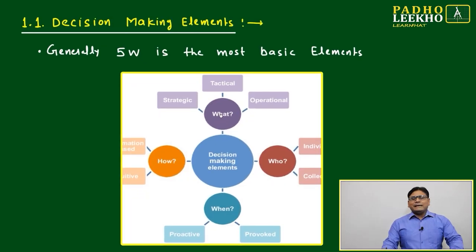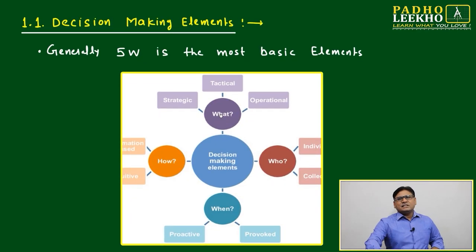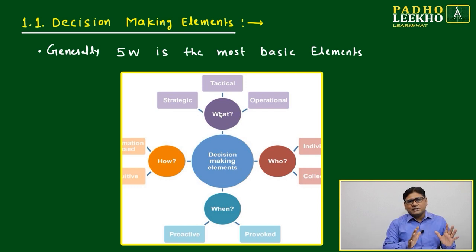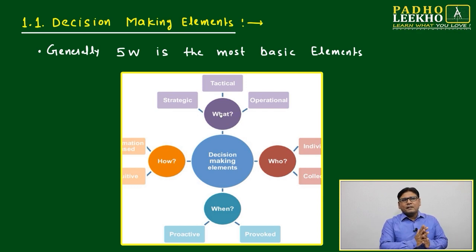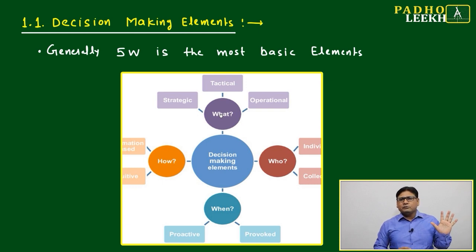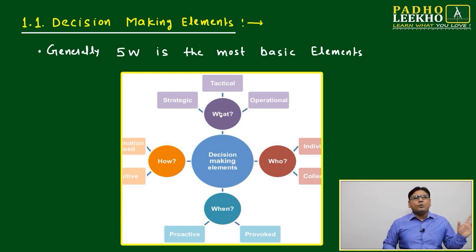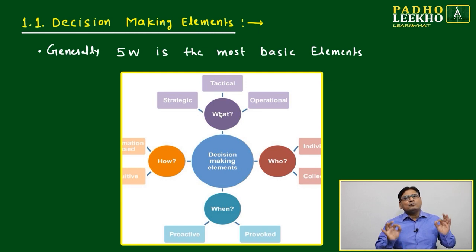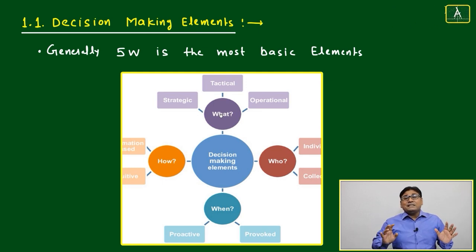What are the decision-making elements? Just like a child, think of it as a 'bacha' concept — the 5W framework: who, which, what, how, when. Based on that only, you have to make the model of decision-making.